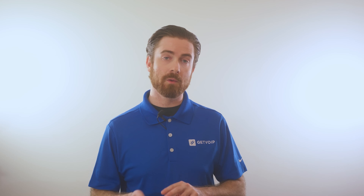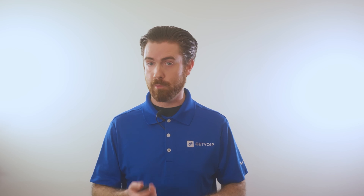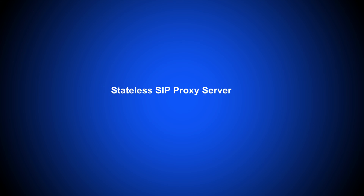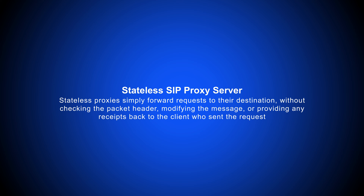There are two main types of SIP proxy servers: stateless and stateful servers, which vary by speed and function. Redirect servers, however, are not proxy servers, but are worth mentioning because they work closely with proxies. Stateless proxies simply forward the request to their destination without checking the packet header, modifying the message, or providing any receipts back to the client who sent the request.